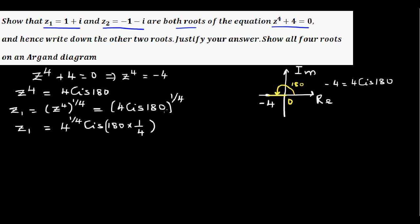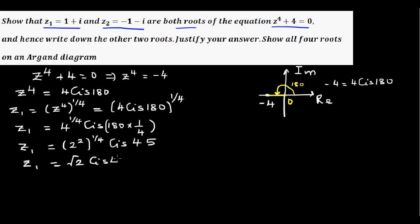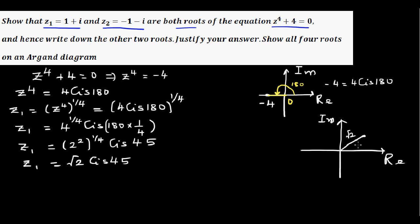So z1 = 4^(1/4) cis 45°. Now 4^(1/4) = (2²)^(1/4) = 2^(1/2) = √2. So z1 = √2 cis 45°. Let me draw this on the real and imaginary axes: z1 is at a distance of √2 from the origin at an angle of 45°.